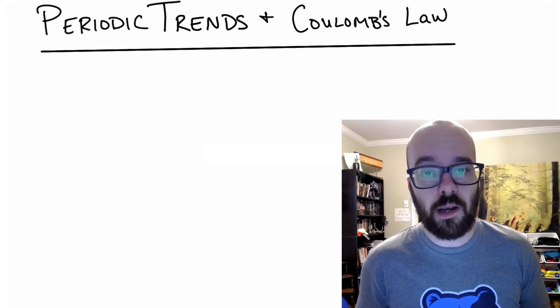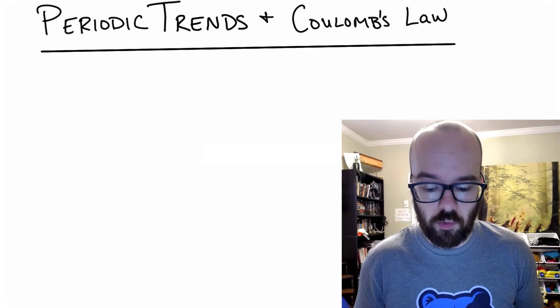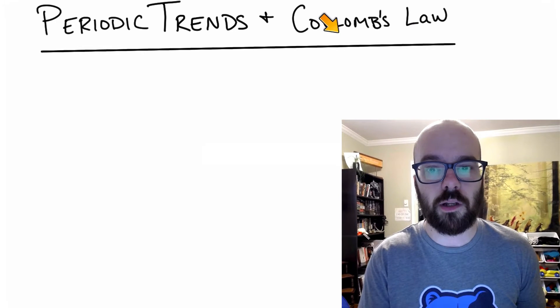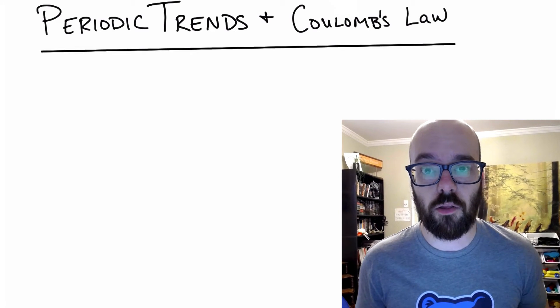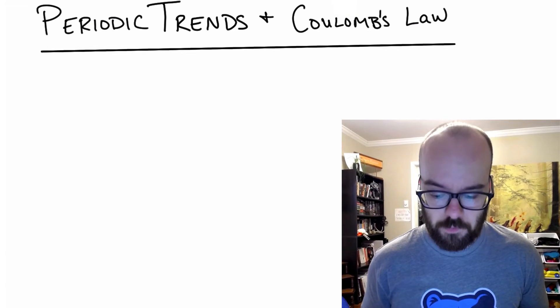In this video, we're talking about periodic trends, and we're going to use Coulomb's law to explain why those periodic trends occur the way that they do.